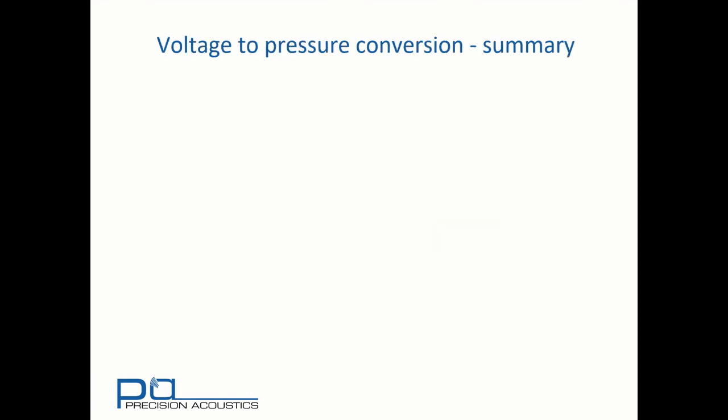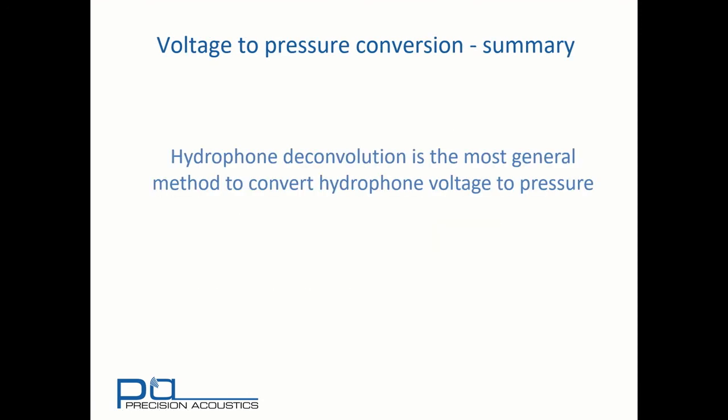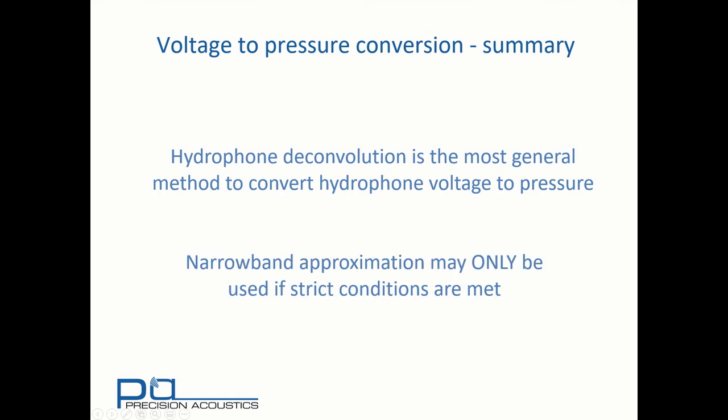So to conclude, hydrophone deconvolution is the most general method to convert hydrophone voltage to pressure. The narrowband approximation may only be used if the strict narrowband conditions are met. We hope you found this interesting. If you did, come back and find some more of the Precision Acoustics tutorial videos.